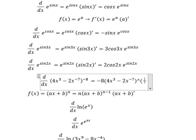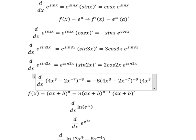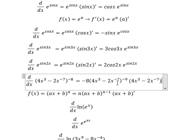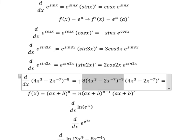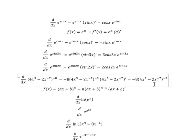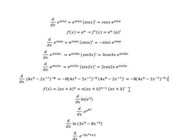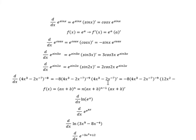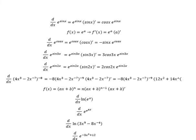Now we have negative eight minus one, so we get negative nine. And we continue to do the first derivative of (4s cubed minus 2s) to the power of negative seven. For the first derivative of s cubed we get 3, and with the coefficient 4 we get 12. The next term: negative seven times negative two gives positive 14, and we have s to the power of negative eight.